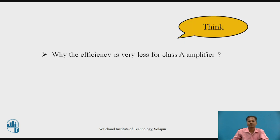Students can pause the video here and think about why the efficiency is very less for a Class A amplifier. For a Class A amplifier, the power dissipation in the output collector circuit is more, since the power transistor remains conducting for the complete cycle of the input signal — 360 degrees. So the power dissipated in the output circuit is higher, and the power dissipated at zero input signal condition in the collector circuit is higher. Therefore, the efficiency of the Class A power amplifier is very less.